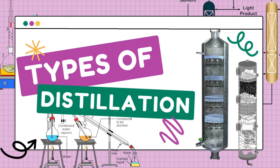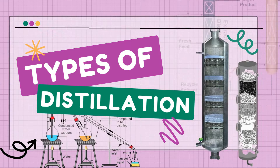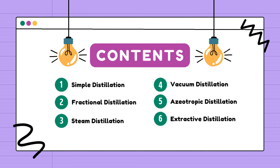Hello guys, welcome back to our YouTube channel. Today in this video we'll be continuing our discussion on distillation. Particularly, we'll be covering the types of distillation, looking at the six most common and worldwide-used types: simple distillation, fractional distillation, steam distillation, vacuum distillation, azeotropic distillation, and extractive distillation. We'll cover the working principle, the procedure, and the applications for each type.